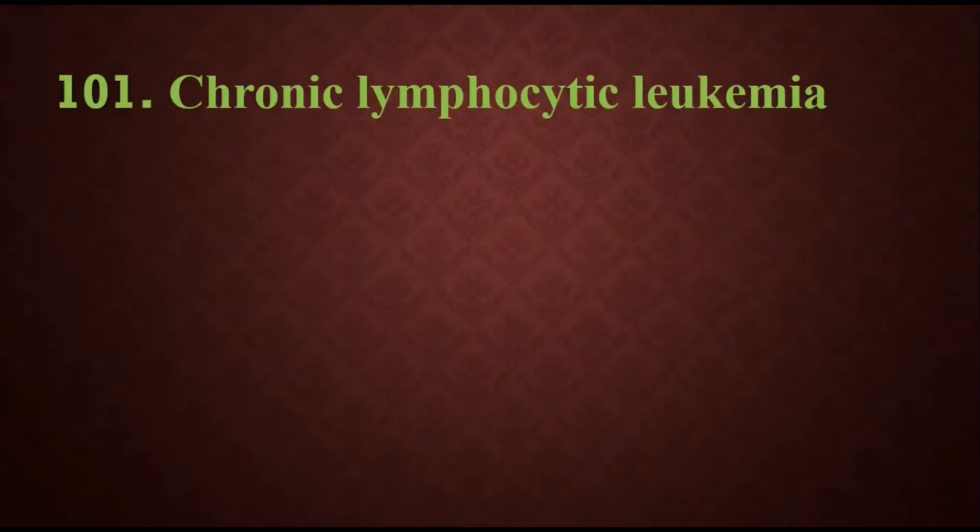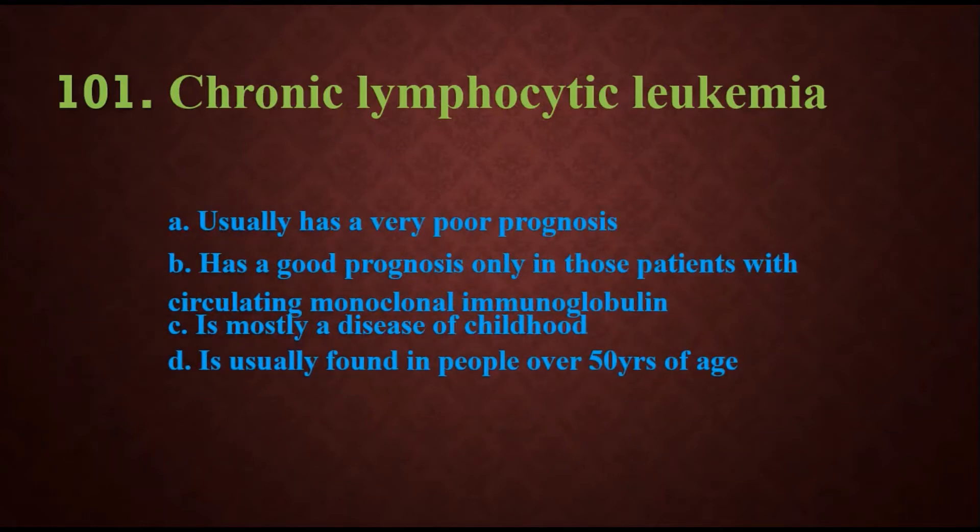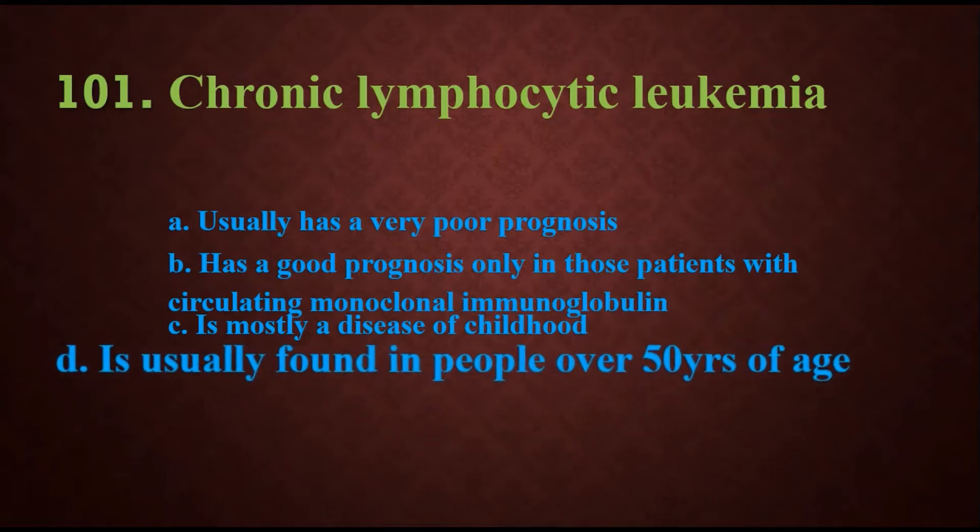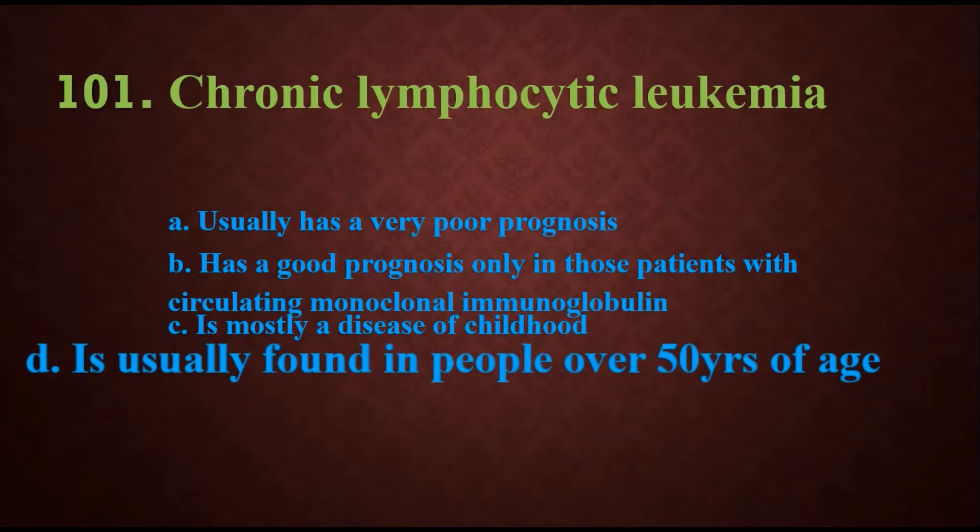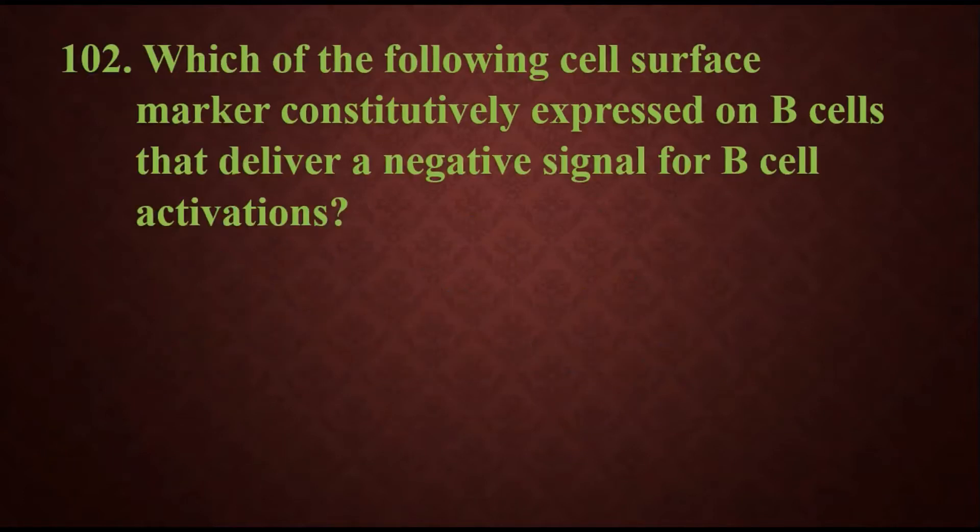Question 101: Chronic lymphocytic leukemia. Options are: usually has a very poor prognosis, has a good prognosis only in those patients with circulating monoclonal immunoglobulin, is mostly a disease of childhood, or is usually found in people over 50 years of age. The answer is chronic lymphocytic leukemia is usually found in people over 50 years of age.